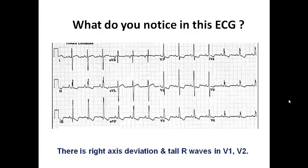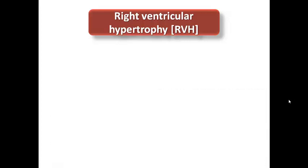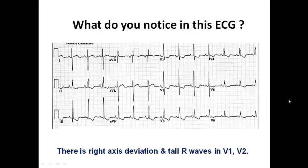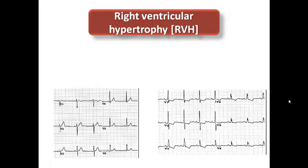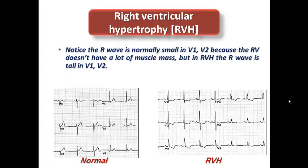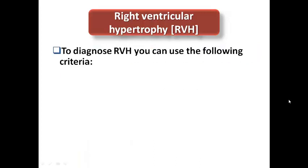Looking at this ECG, we can notice right axis deviation and a tall R-wave in V1 and V2, which can be diagnostic for right ventricular hypertrophy. Comparing a normal ECG with RVH, the R-wave is normally small in V1 and V2 because the RV doesn't have a lot of muscle mass compared to the left ventricle. In the presence of RVH, the R-wave becomes tall in V1 and V2. We need solid diagnostic criteria for RVH, just as we used for LVH.